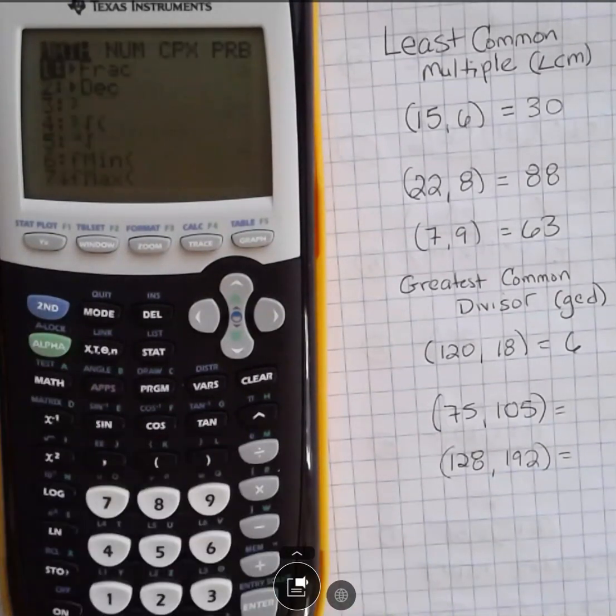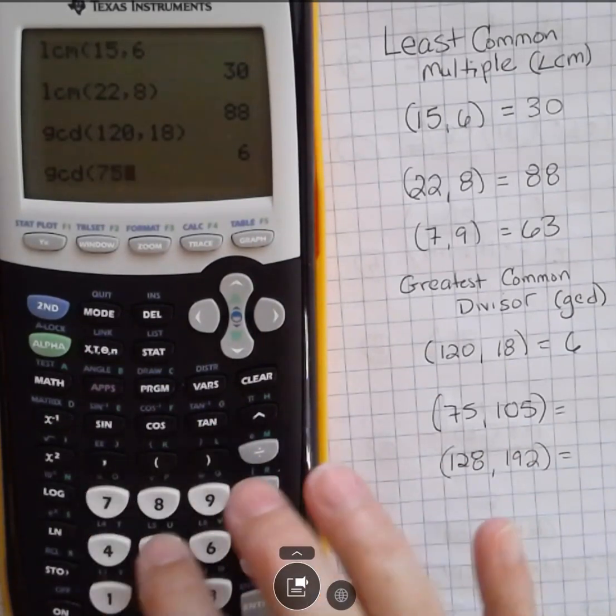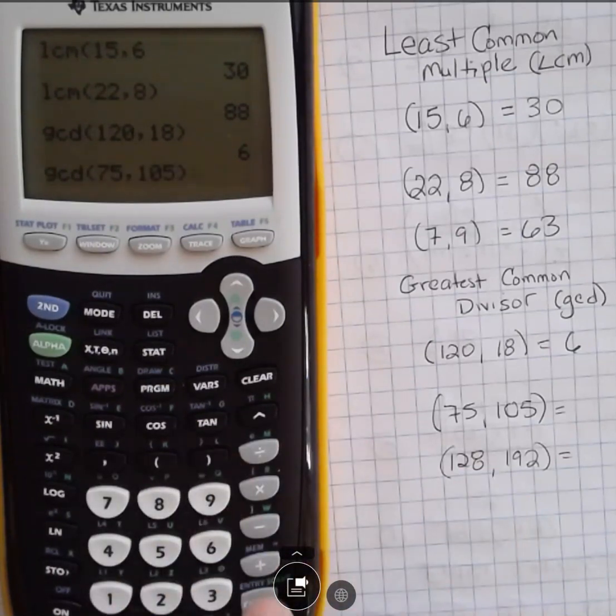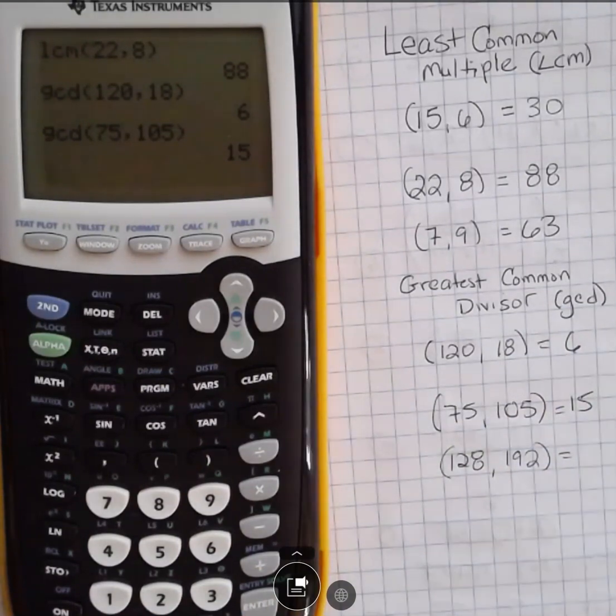I'm going to do that again. Math, go over 1 to number. And then I'm just going to hit 9 because I know it's 9. But again, you can scroll around to find that. 75 comma 105 parentheses. And that tells you that 15 is the greatest common divisor for those two numbers.